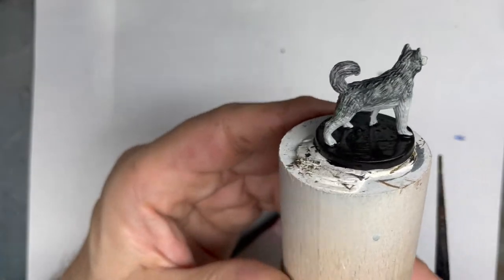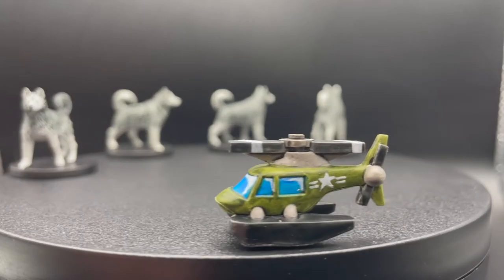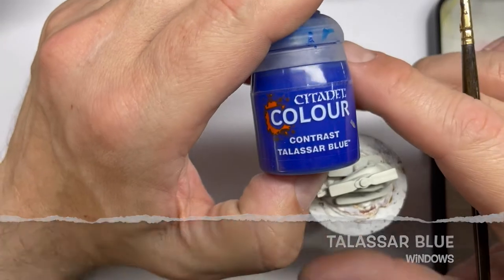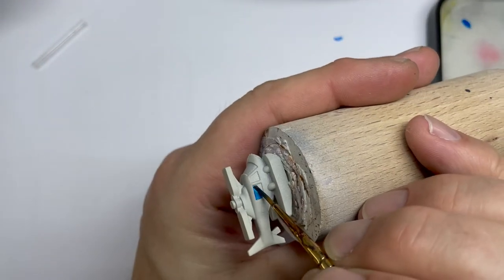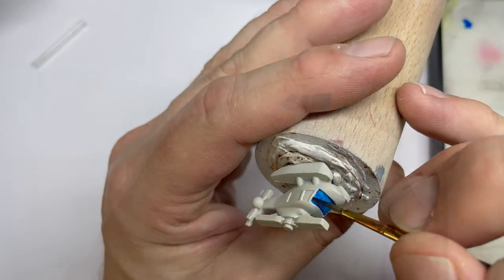Next up we got the helicopter. We start with Thalassa Blue for the windows. Here you have to be very precise. At this stage you can easily fix your mistakes and it should look like this.